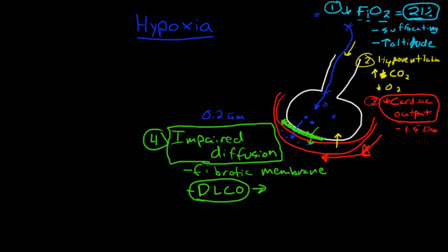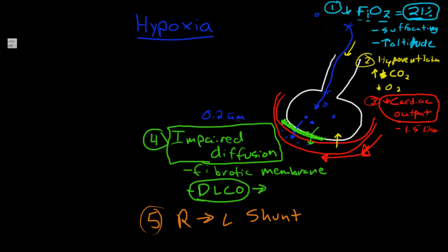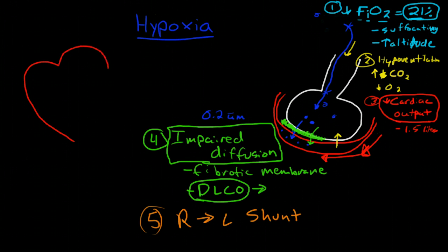Okay, and then the next would be a right to left shunt. Now, a right to left shunt suggests that oxygen is moving from the right side of the heart to the left side of the heart without passing by oxygenated alveoli. Well, here's a rough picture of our heart.